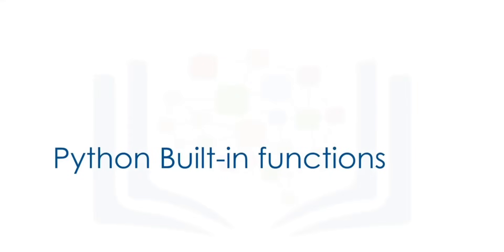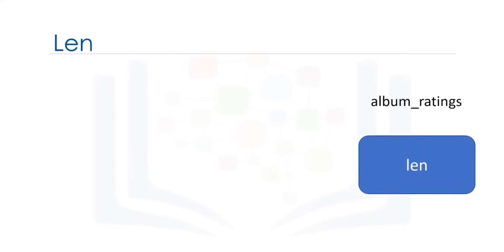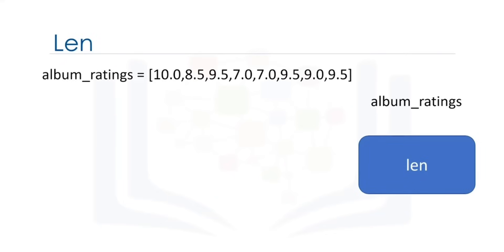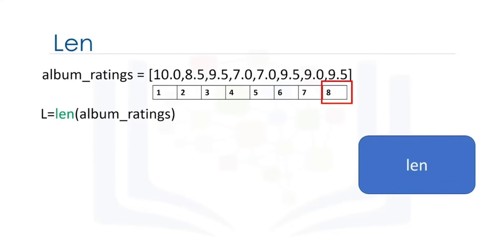Python has many built-in functions. You don't have to know how those functions work internally, but simply what task those functions perform. The function len takes in an input of type sequence, such as a string or list, or type collection such as a dictionary or set, and returns the length of that sequence or collection. Consider the following list. The len function takes this list as an argument, and we assign the result to the variable l. The function determines there are 8 items in the list, then returns the length of the list — in this case 8.